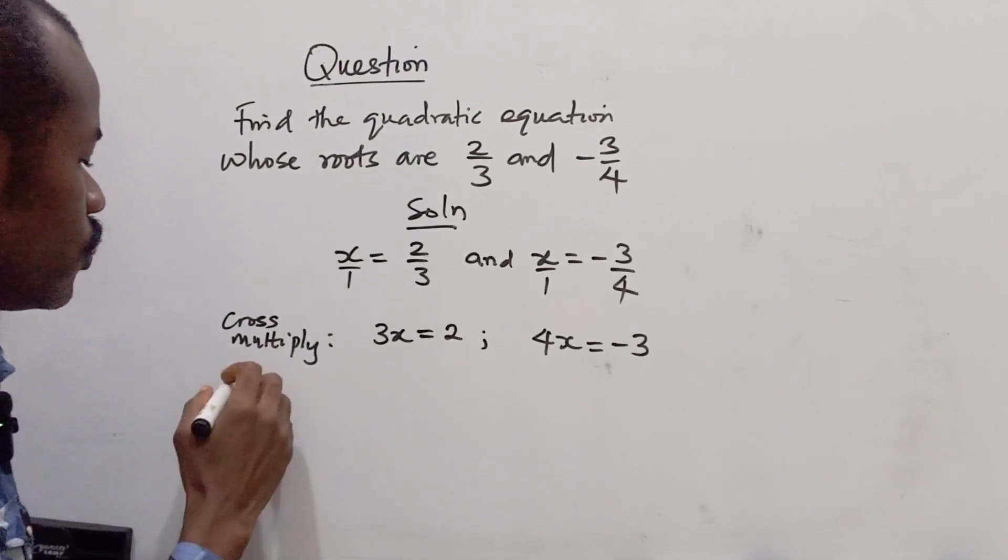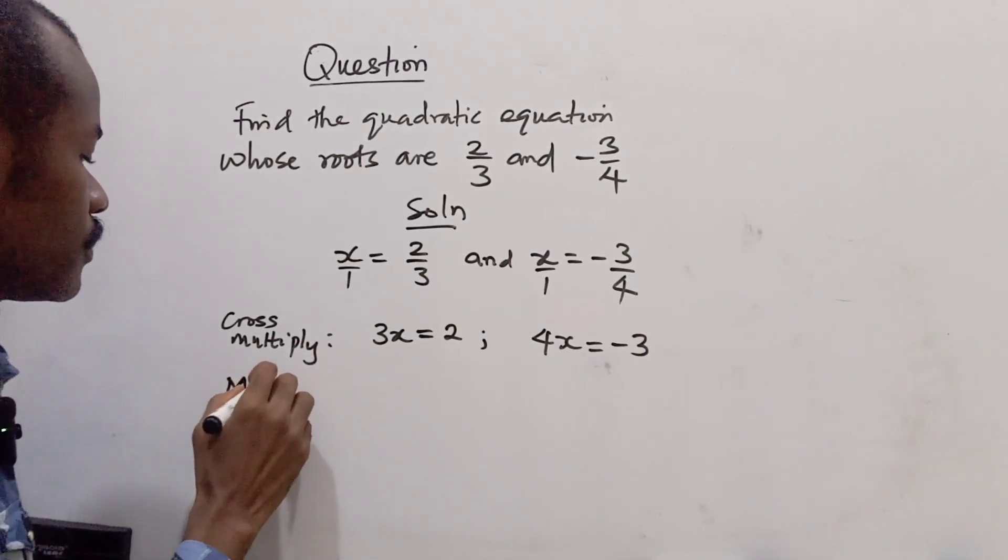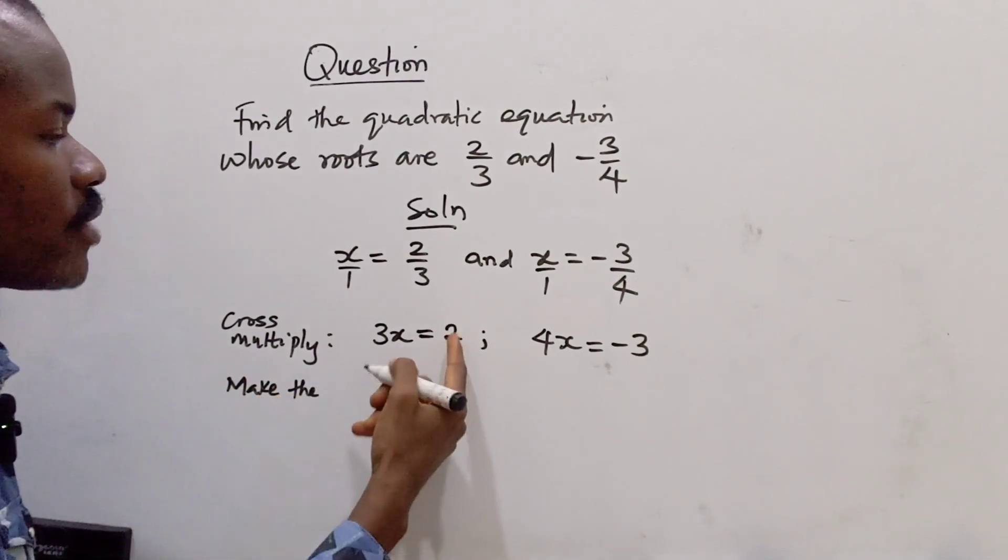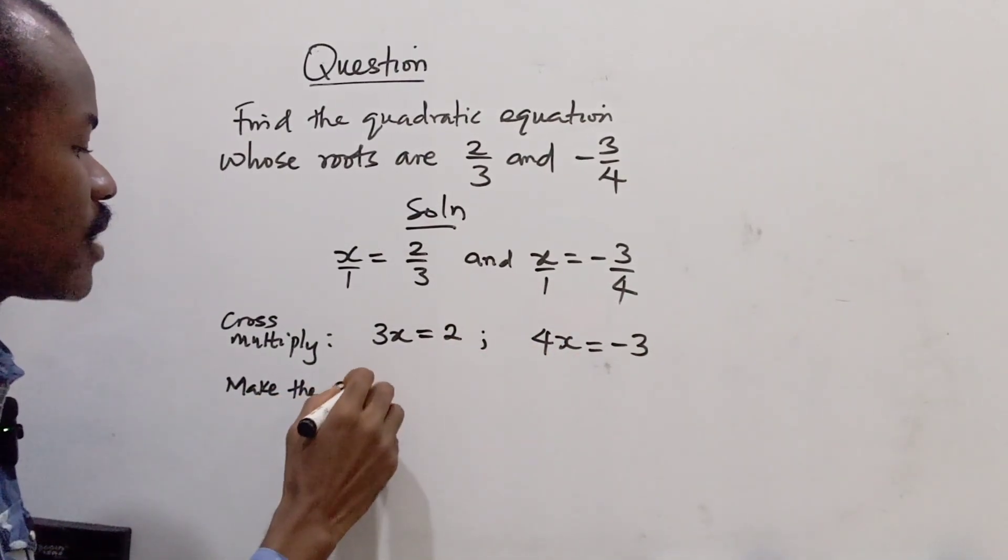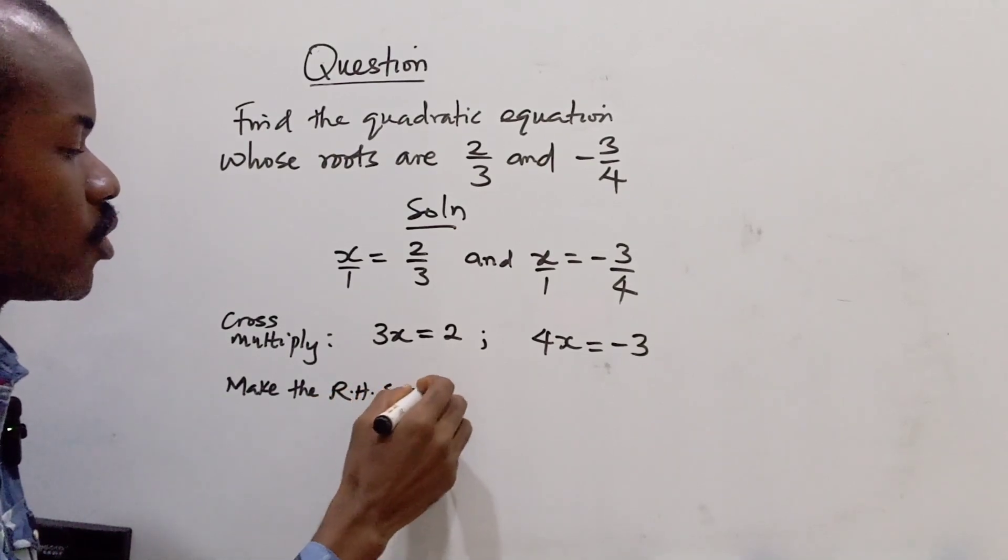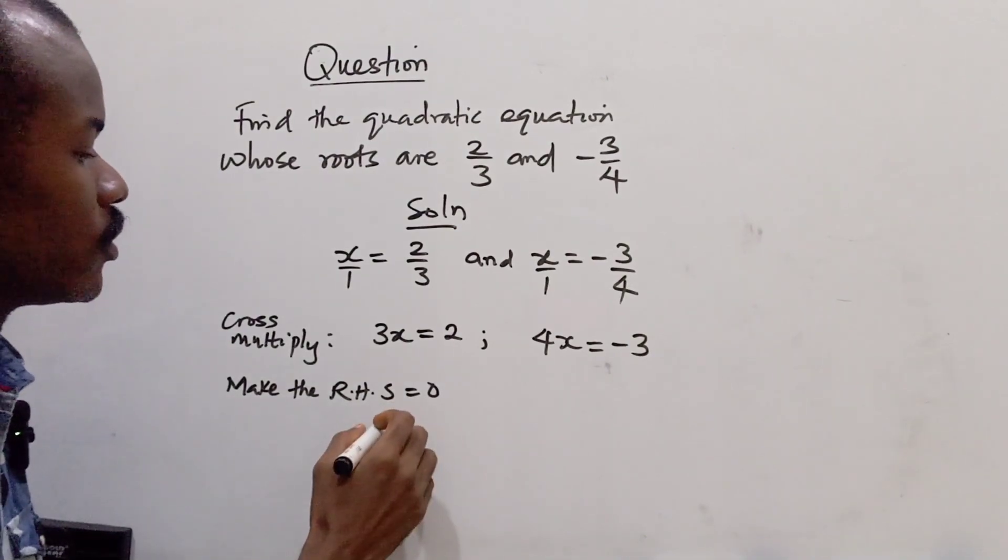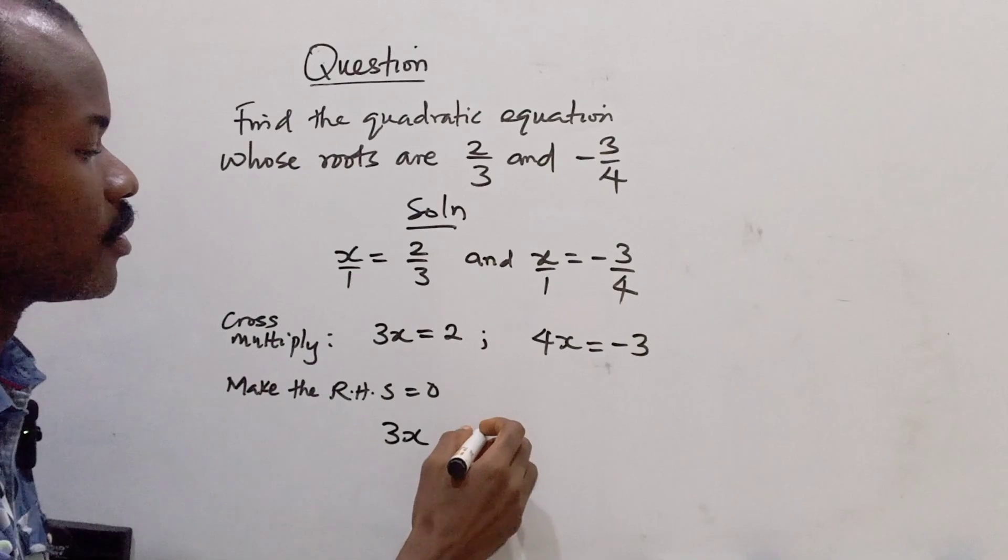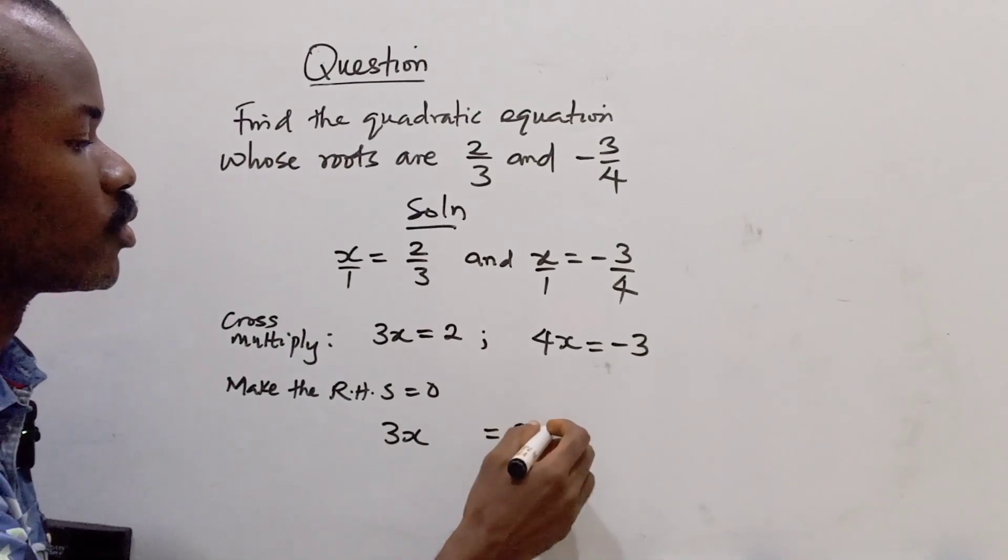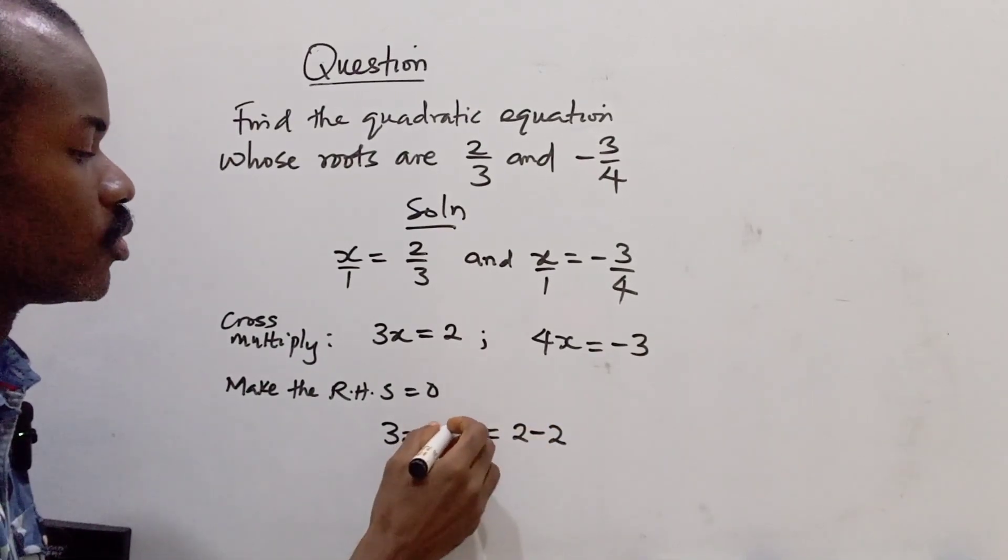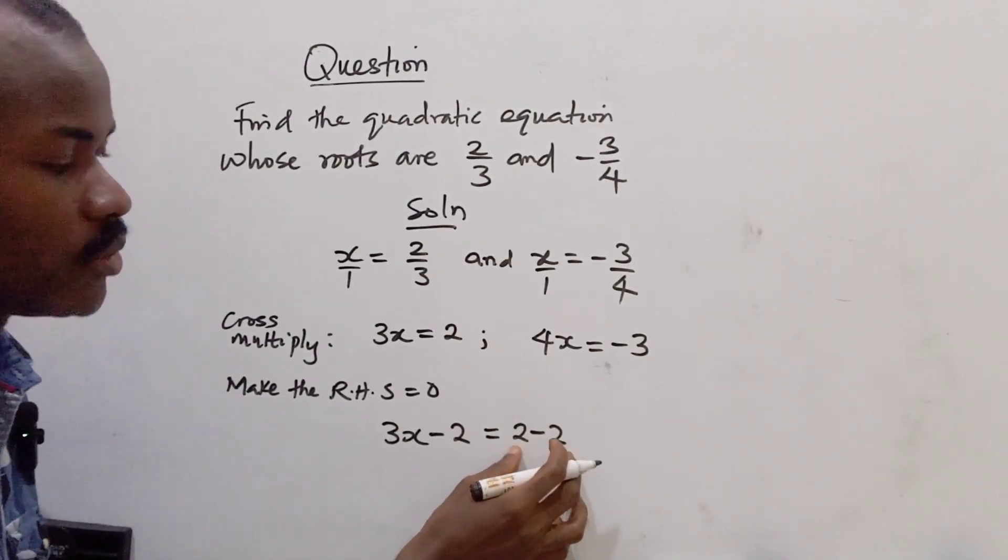Now our next step is to make the right-hand side equal to 0. How do I do that? I have 3x equals 2. I'm going to subtract 2 from both sides so that it becomes 0.